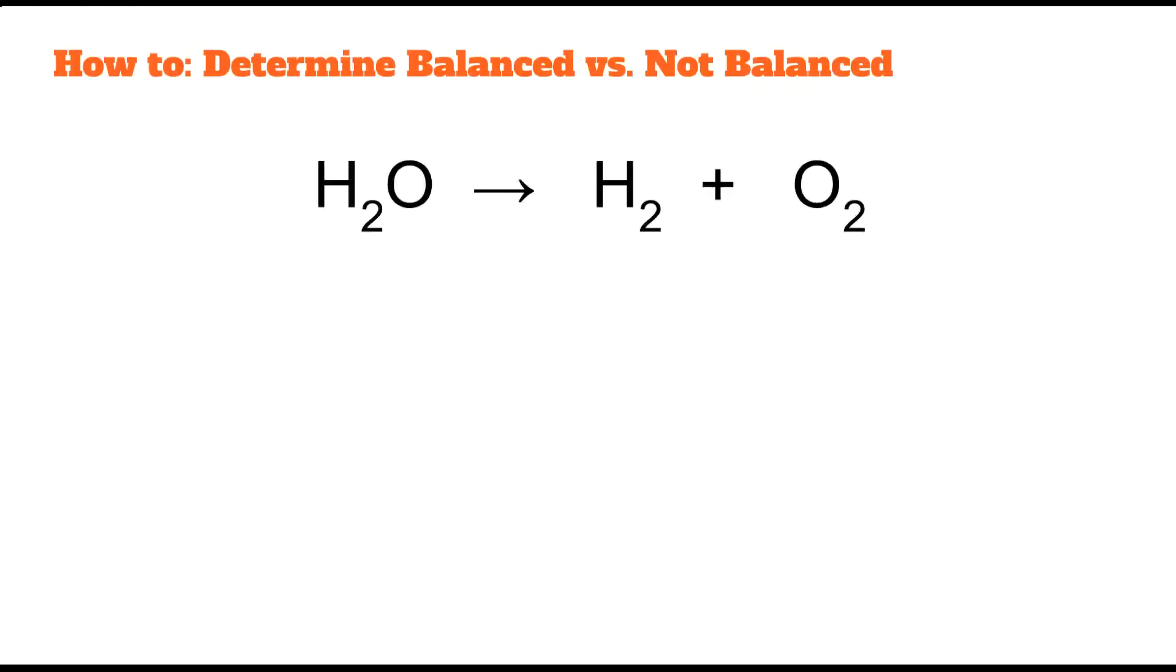So why do we need to know if something is balanced or unbalanced? Well, all chemical equations need to follow the law of conservation of mass, which states that matter cannot be created nor destroyed. So in this case, it means that whatever we start with in our reactants, we need to finish with in our products. You have to have the same number and type of atoms in your reactants as you do on your products.